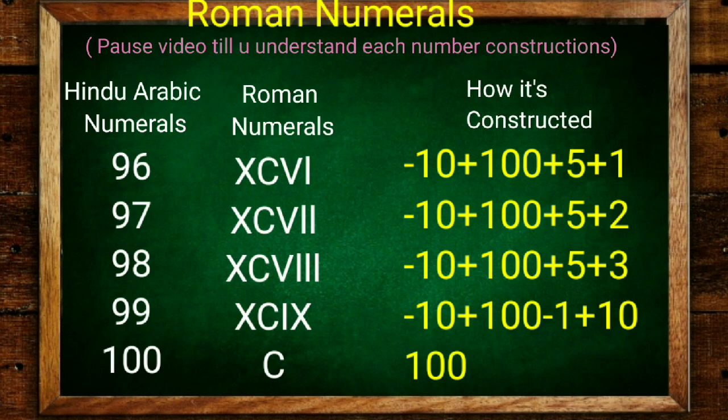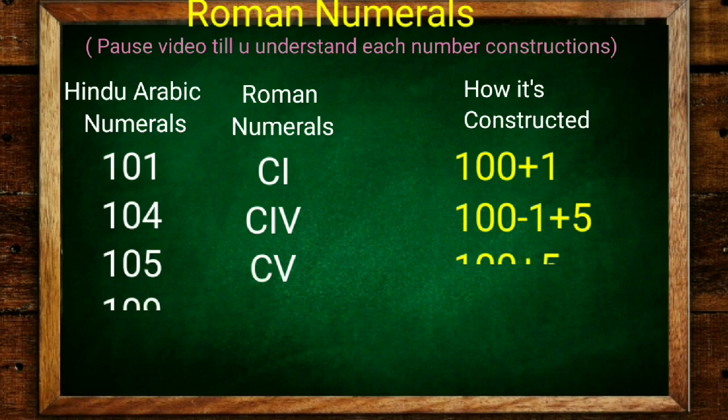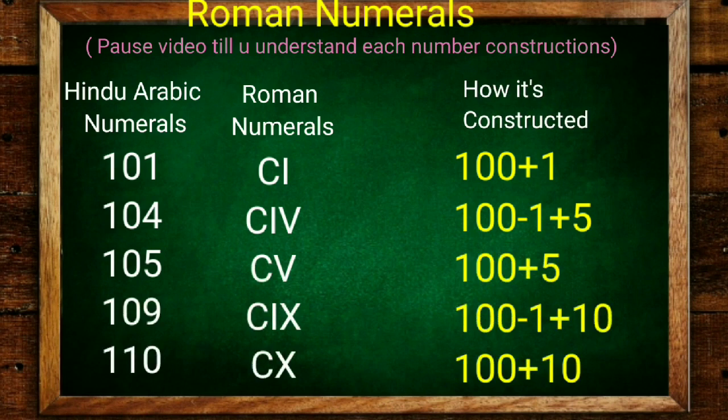Now 96, 97, 98. Go for 99: C is 100 minus 10 and 10 minus 1, so 90 plus 9. C is 100. Now we learn beyond 100: 101 is 100 plus 1, C plus 1. 104 is 100 minus 1 is 99 plus 5. 105, 109, 110 is 100 plus 10.